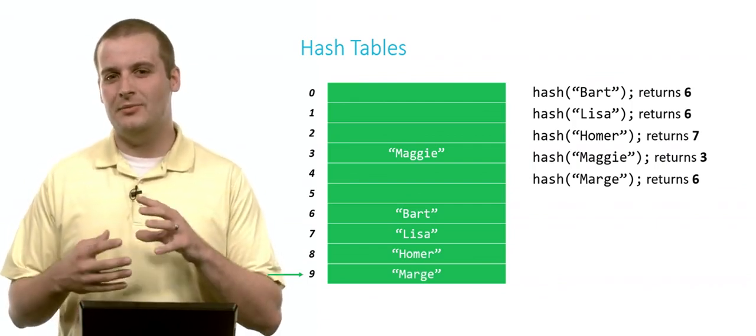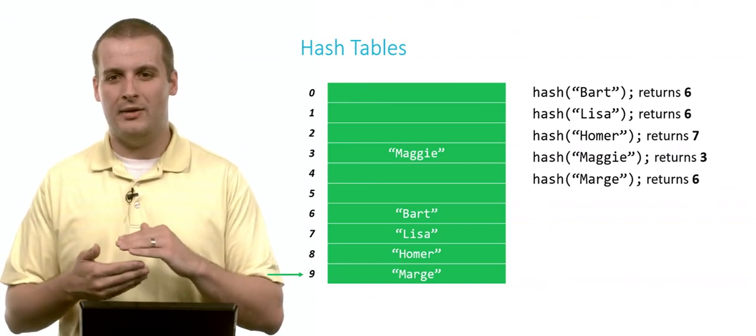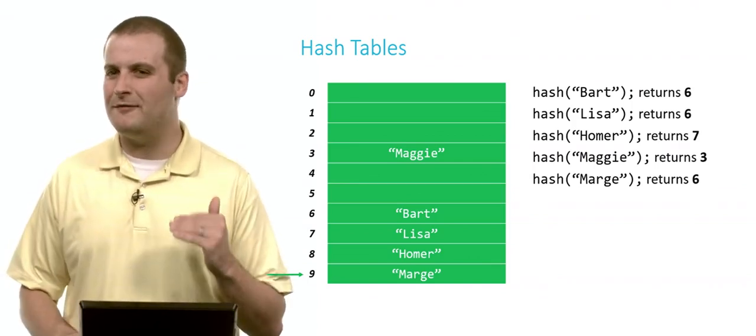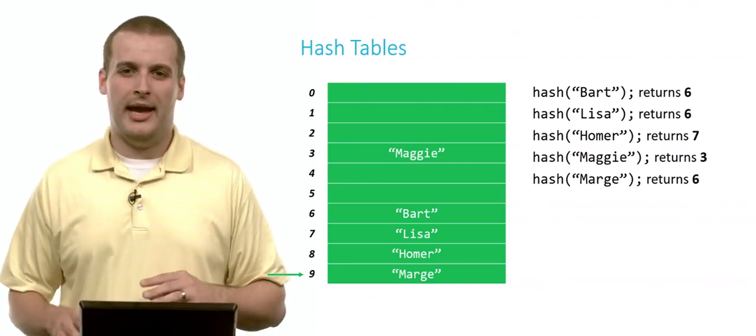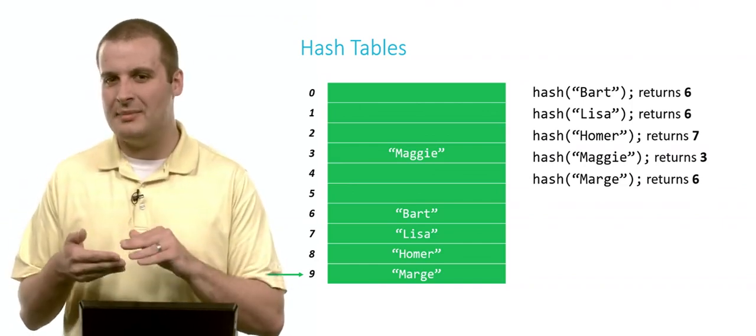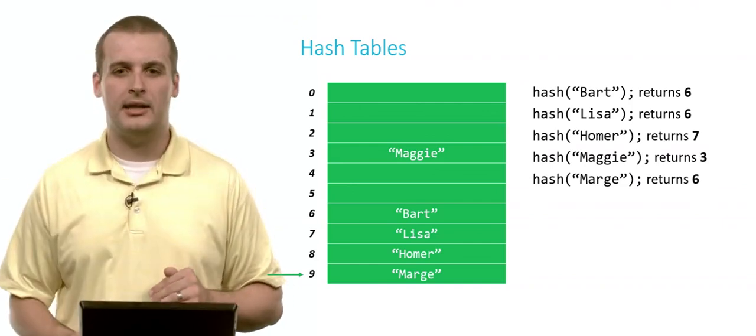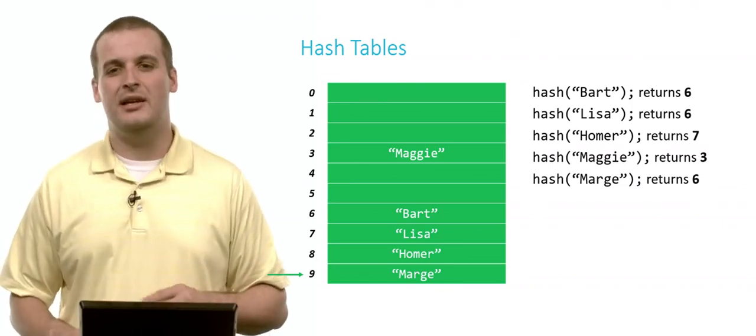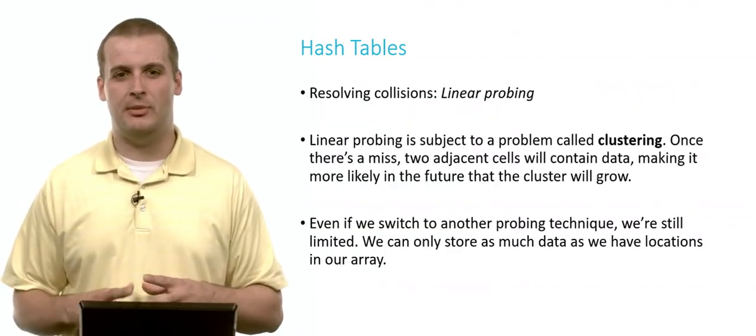Already we can see that we're starting to have this problem where now we're starting to stretch things kind of far away from their hash codes. And that theta of 1, that average case of being constant time, is starting to get a little more, starting to tend a little more towards theta of n. And we're starting to lose that advantage of hash tables.